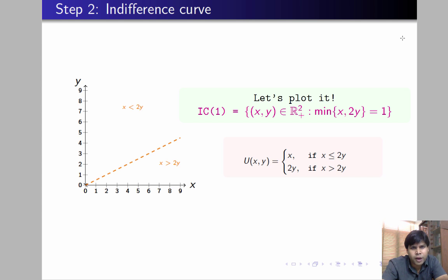What we're going to do is plot a line y equals x by 2, and we're going to divide the entire commodity space into two regions: one is x less than 2y and the other is x greater than 2y. On this dashed line through the origin, we have y equals x by 2. We know that the utility function is x in this region and the utility is 2y in this region.